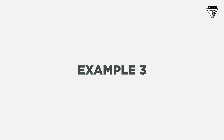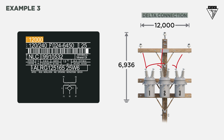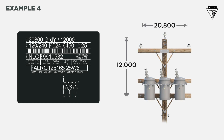In our third example, the primary coil voltage rating on the nameplate reads 12,000 volts. Since there is only one number listed, we know they should be connected delta. In our last example, the primary coil voltage rating is 12,000 volts. This matches our phase-to-neutral voltage, so these transformers should be connected Y.